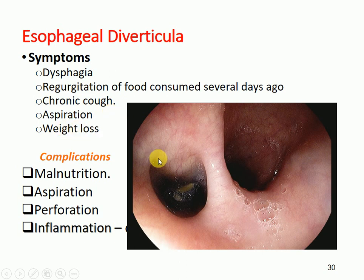Weight loss can also occur due to impairment in the digestion process. The serious complications include malnutrition due to impairment in the gastrointestinal tract, aspiration of food materials into the lungs, chronic cough, and inflammation. These are the main complications associated with esophageal diverticulum.